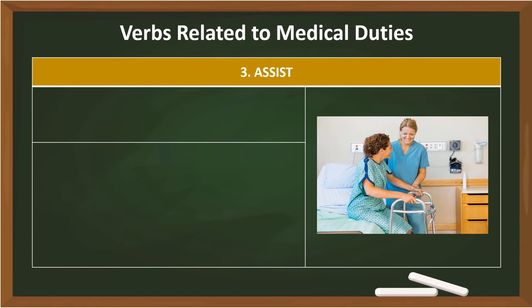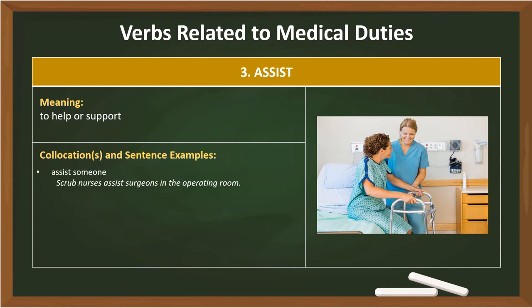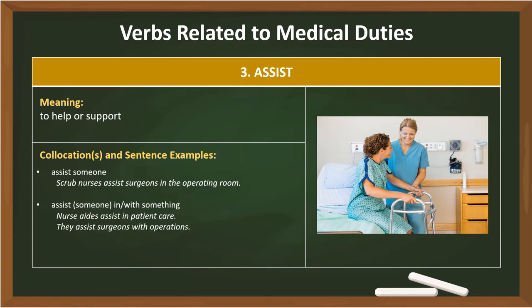3. Assist. Meaning: to help or support. Collocations: Assist someone — Scrub nurses assist surgeons in the operating room. Assist someone in/with something — Nurse aides assist in patient care. They assist surgeons with operations. Assist someone in doing something — They assist nurses in taking care of patients.